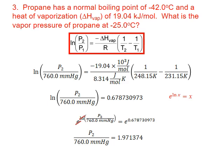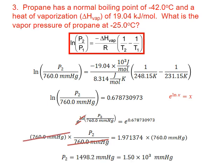We isolate P2 by multiplying both sides by 760 millimeters of mercury. It cancels out on the left, leaving us with P2 equals 1498.2 millimeters of mercury. We round to three significant figures to match the least number of significant figures in our problem: 1.50 times 10 to the third millimeters of mercury.